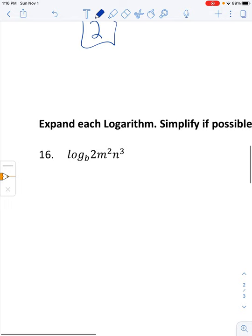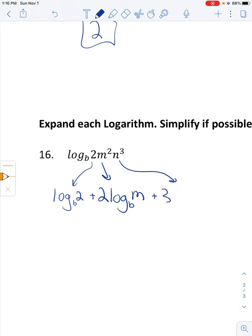Last two questions here have us expand each problem as much as we can. So what I would do here is take each term and separate it out. So here we have a 2. So this would be log base B of 2. And then we're multiplying, so that shows up as addition. So then we would have the log base B of the letter M. And I can see that it's M squared. So I'm going to go ahead and drop that squared out front. And then here we have N cubed. So log base B of N cubed. I dropped the 3 out front.